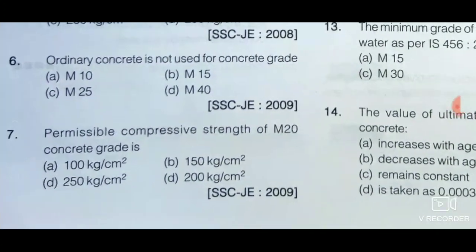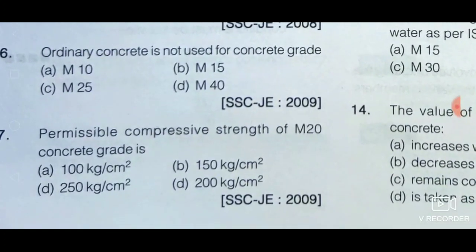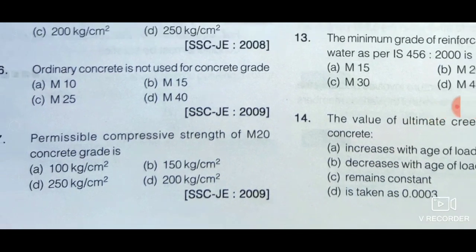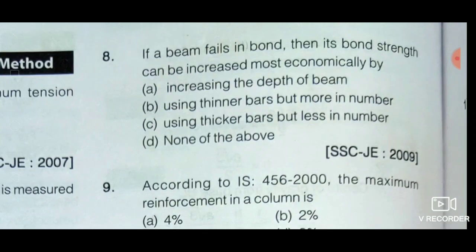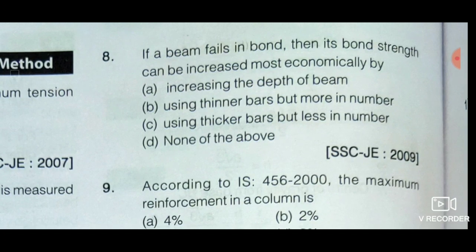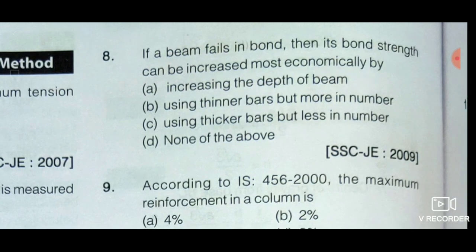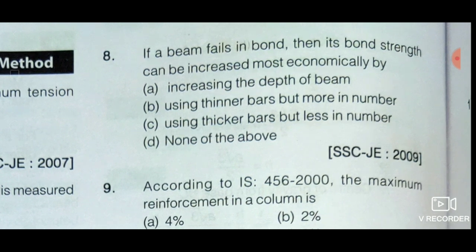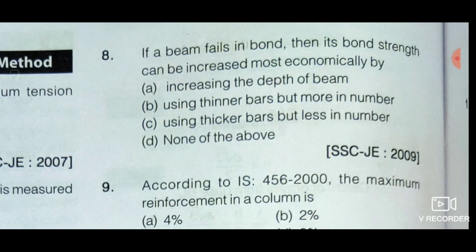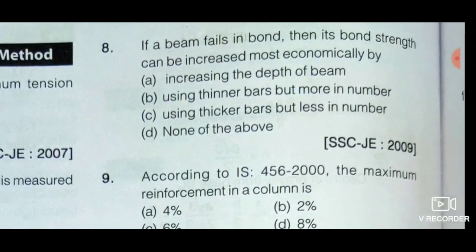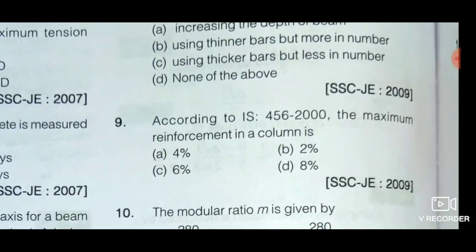Next question: If a beam fails in bond, then its bond strength can be increased most economically by — option A: increasing the depth of beam, option B: using thinner bars but more in number, option C: using thicker bars but less in number, and option D: none of the above. Option B is the correct answer. By using more number of thinner bars, the required development length gets reduced and thus it improves the bond strength.